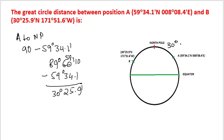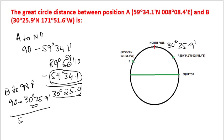This is equal to 30 degrees 25.9 minutes. Point B to north pole is going to be 90 minus 30 degrees 25.9 minutes. You can realize this figure is the same as this figure, so the answer is going to be 59 degrees 34.1 minutes.